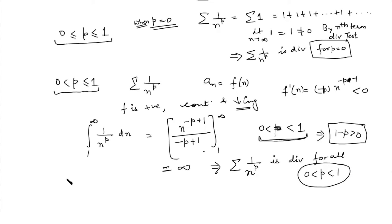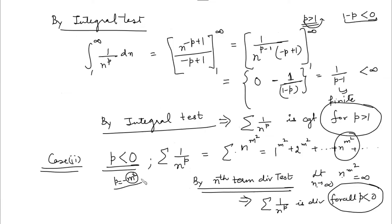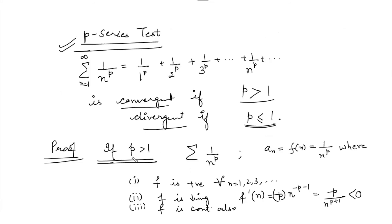The only remaining case is when P equals exactly 1. When P = 1, the series terms can again be written as a function that is positive, continuous, and decreasing, so the integral test applies. The integral of 1/n is log n, and when we apply the limits from 1 to infinity, this is infinity. So the series is divergent for P = 1. Combining all cases: for P > 1 the series is convergent, and for P ≤ 1 (including P = 1, 0 < P < 1, P = 0, and P < 0) the series is divergent. This completes the proof of the P-series test.